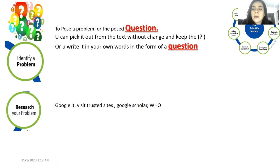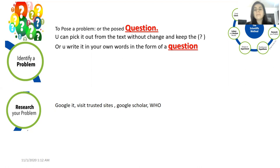First, last time we explained the scientific method, and we said that we have to start with posing a problem. So guys, always when I ask you to pose a problem, you have to answer by a question. So the posed problem should always be in the form of a question. This is the first action verb — pose the problem — it's a question. You have to answer by a question.